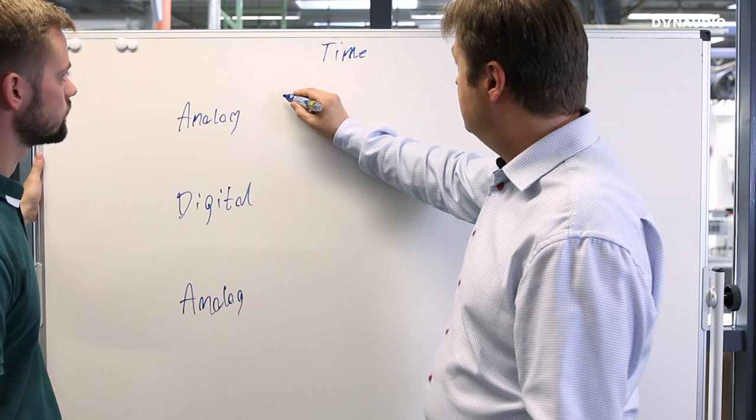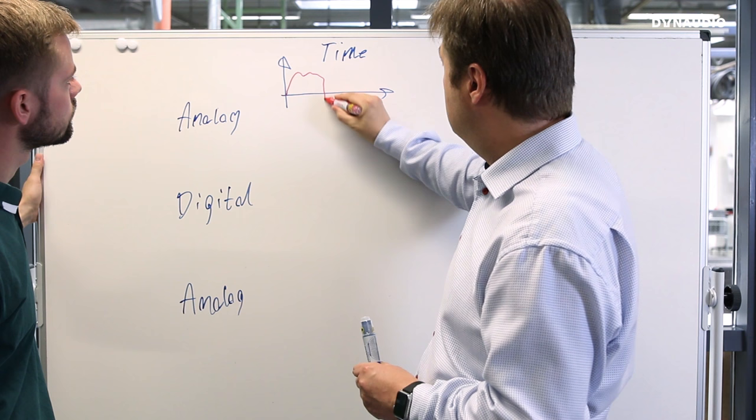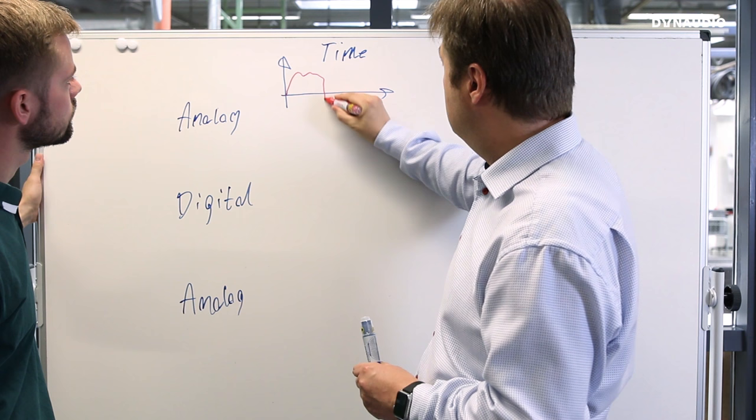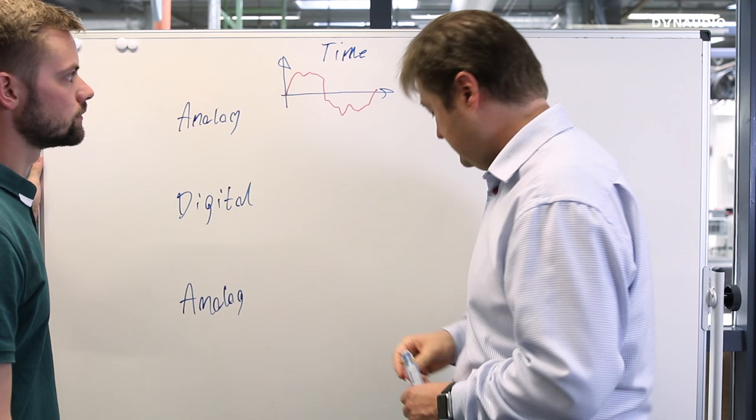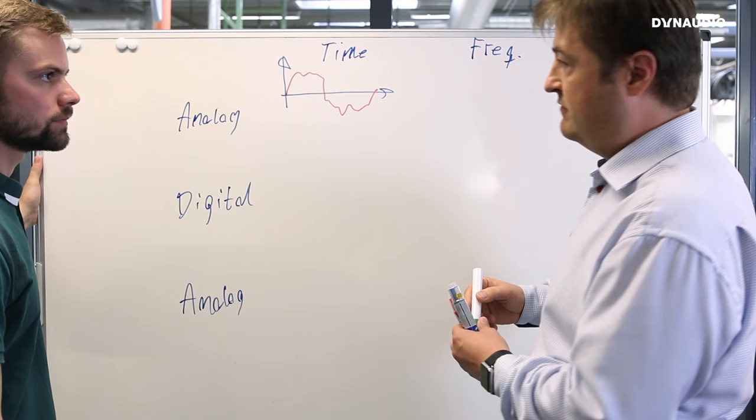We can look at things in time domain or in frequency domain. And let's just take one random example. If we take a time signal, it could look like, let me show this. It could be something like this. On purpose, I have not drawn just a simple sinusoid, but it's more complicated.